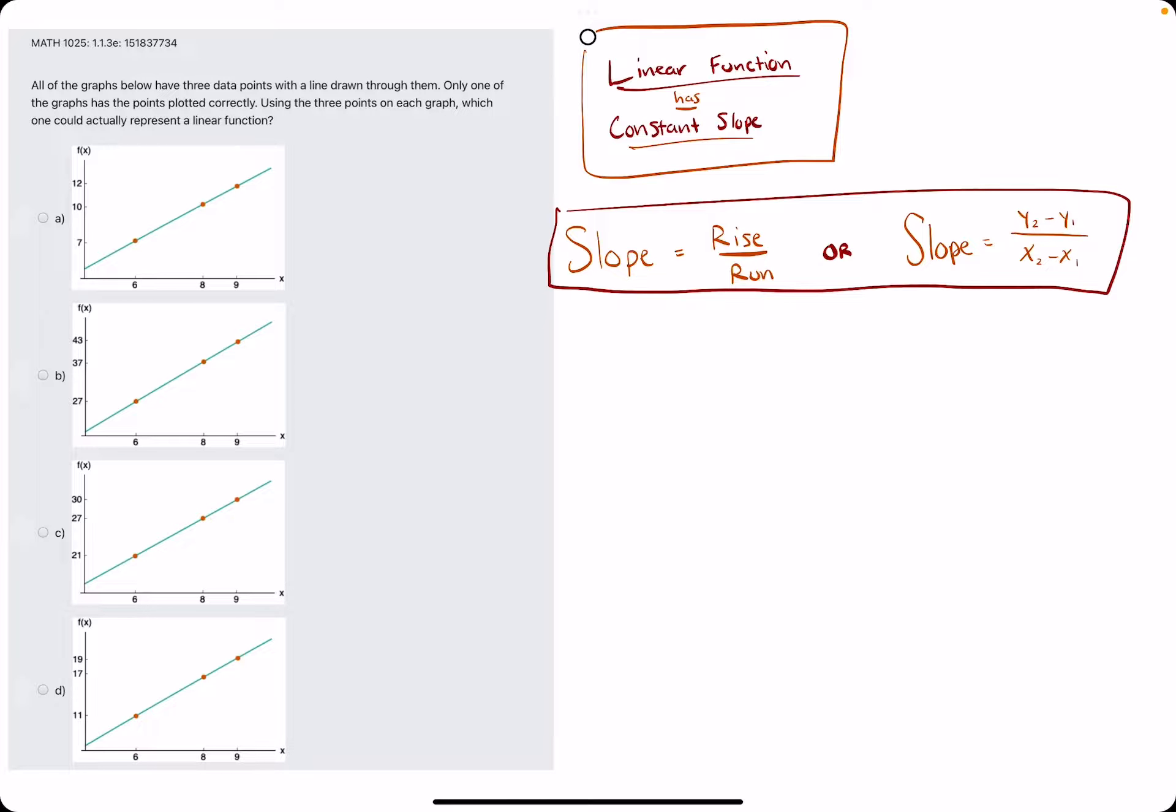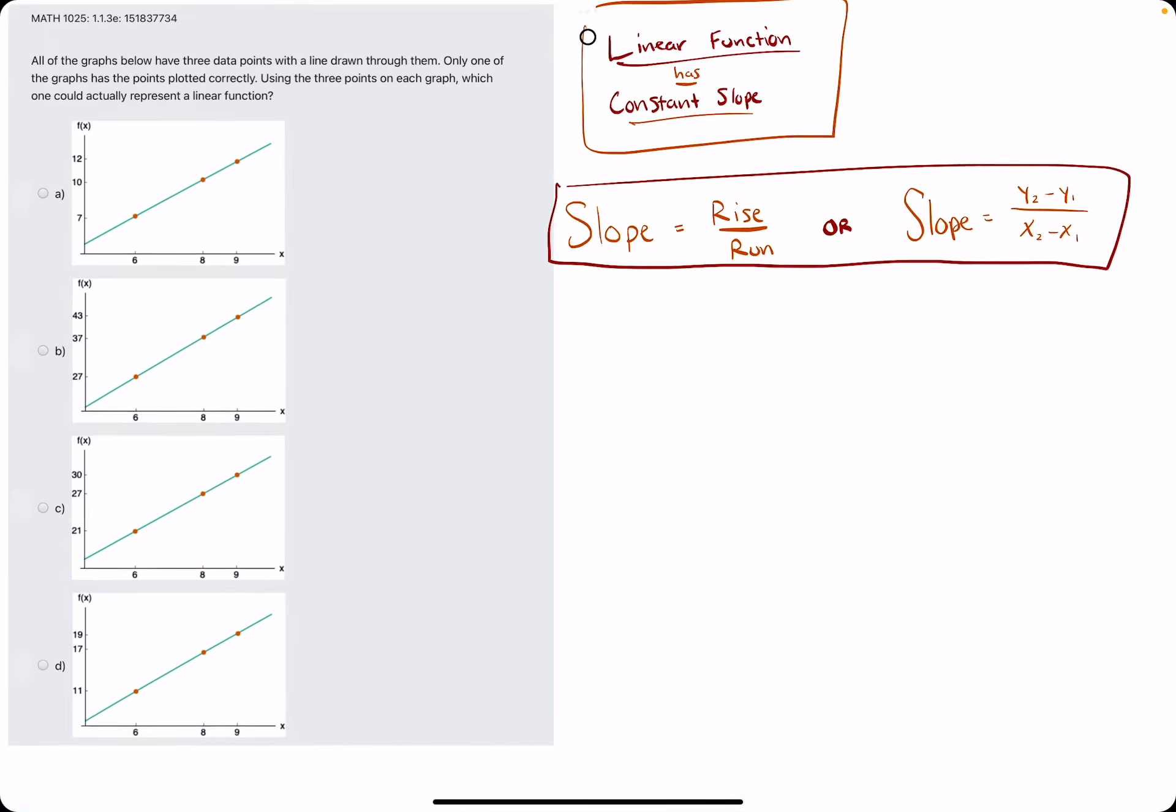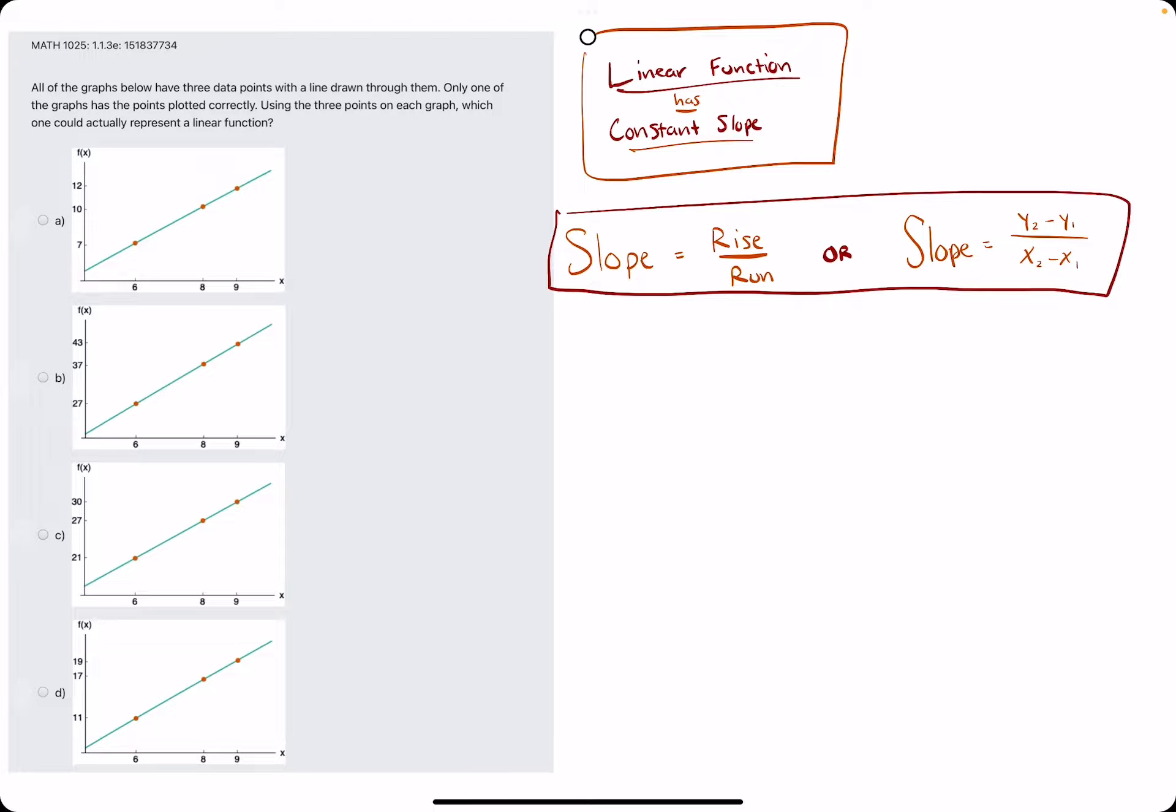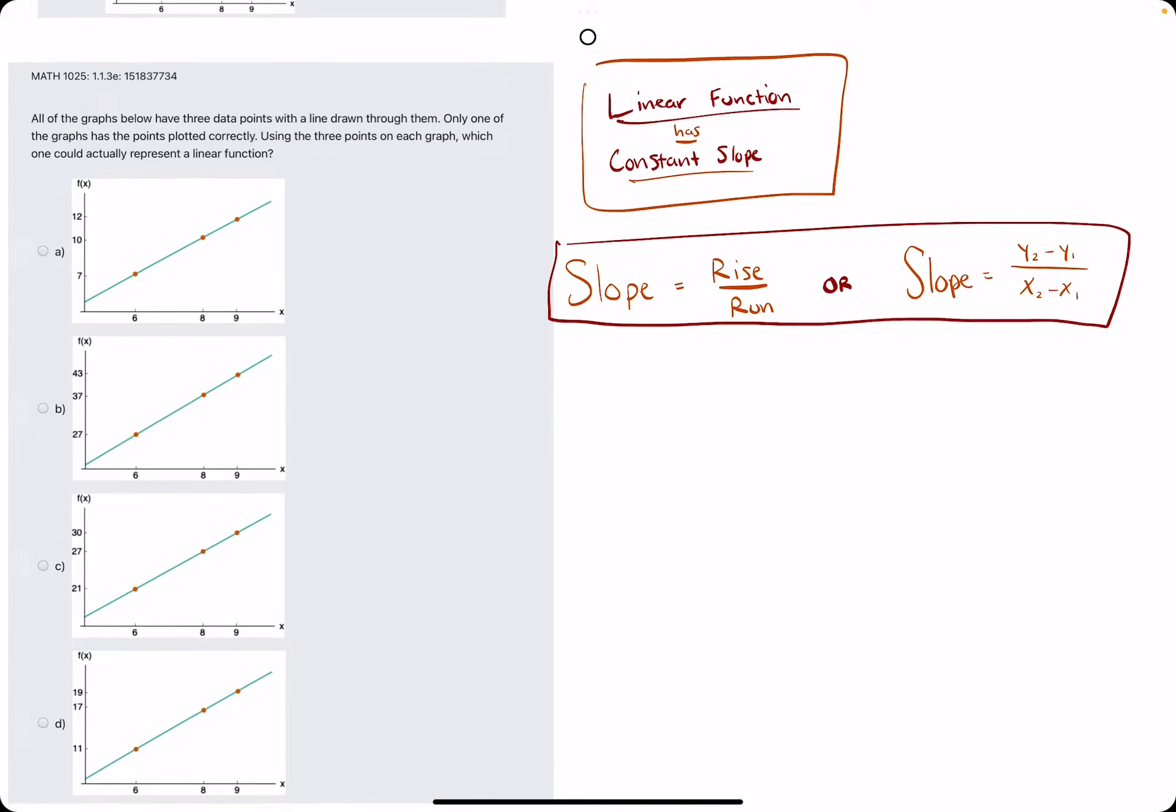In this problem, we are checking to see which graph has a consistent or constant slope the entire time. In other words, proving that it is a linear function.